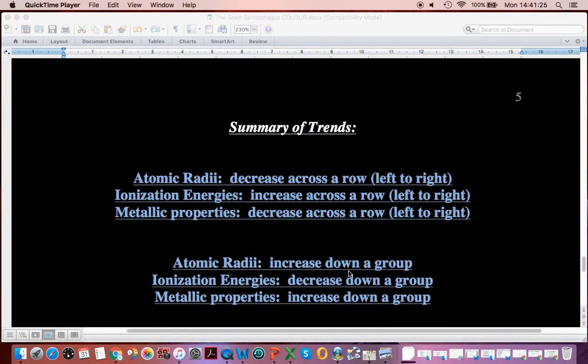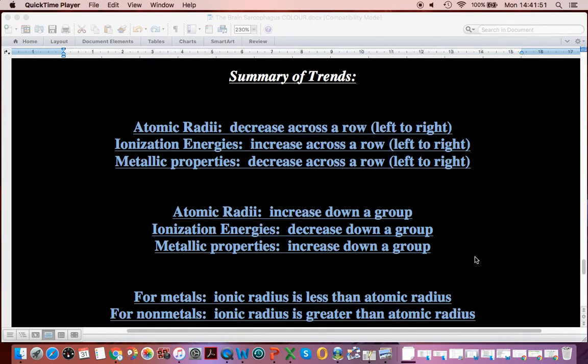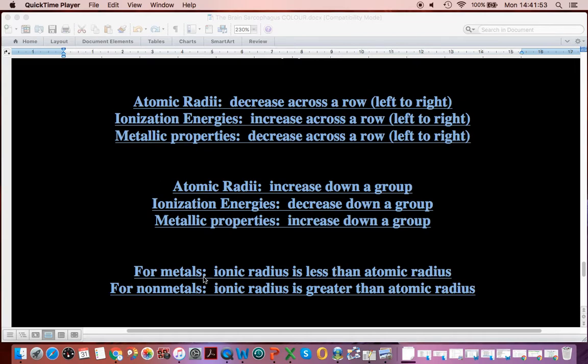Now, actually, before we get to the last thing there, so what we're really saying is you can see atomic radii and metallic properties have a lot of similarities. If atomic radii increases, metallic properties also increase, because we know one of the properties of metals is they tend to lose electrons. And here we have atomic radii decreases across a row, and therefore metallic properties decrease across a row, because it's harder for them to lose electrons. In fact, non-metals want to gain electrons.